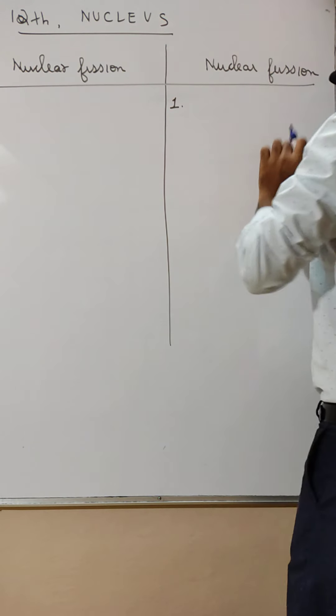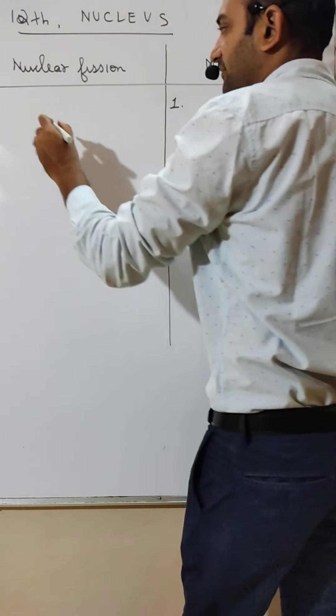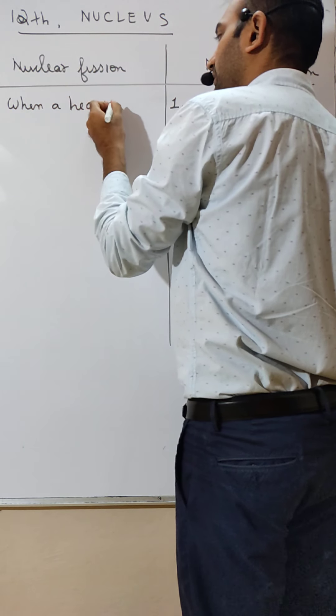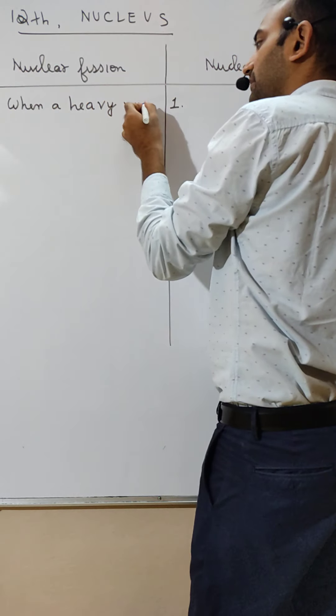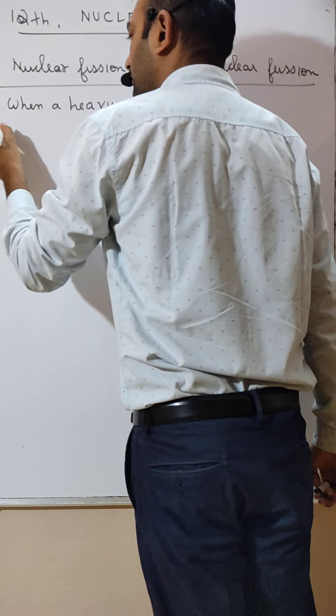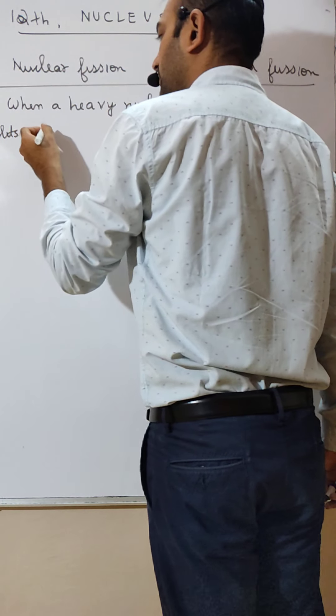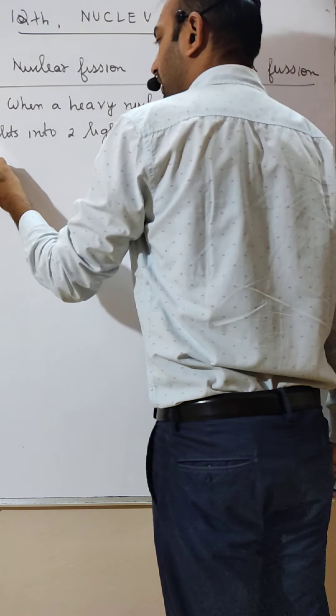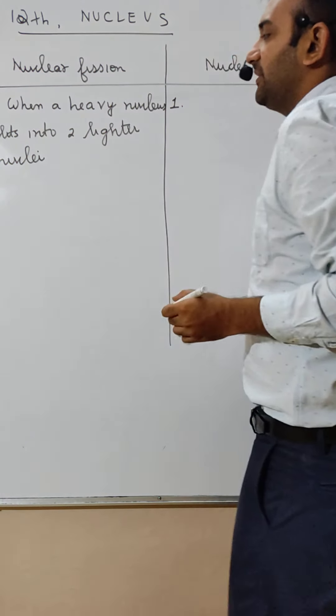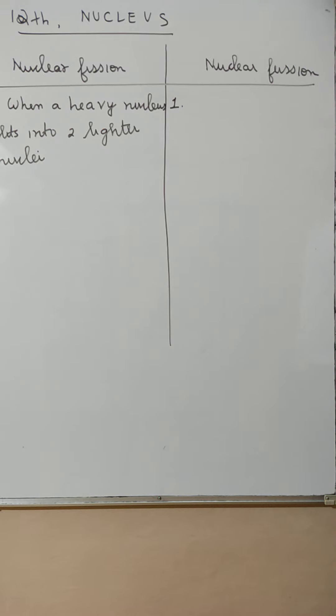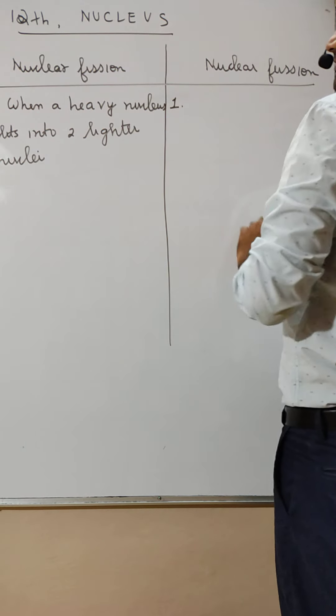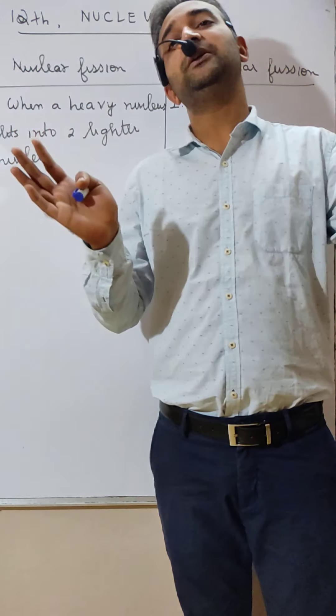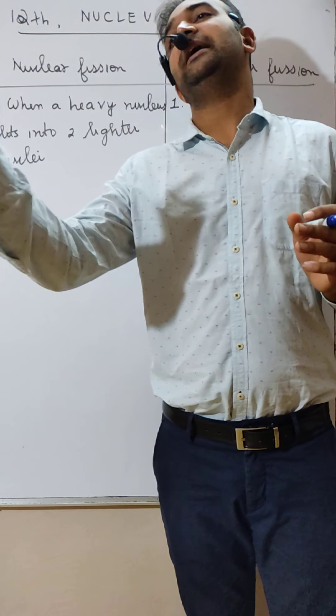Fission means when a heavier nucleus splits into two lighter nuclei. For example, one big uranium will split into krypton and barium.